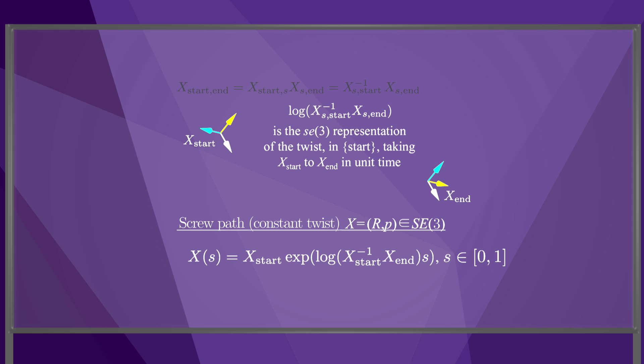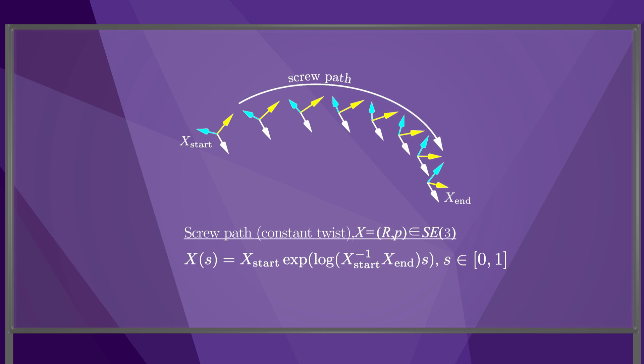The matrix exponential is multiplied on the right since the twist is expressed in the start frame, not the space frame. The path parameter s determines how far we follow the twist that takes the start frame to the end frame. The final screw path can be visualized as shown here. This is a straight-line path in the sense that the twist is constant throughout the motion.